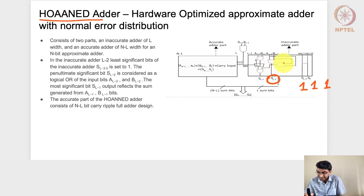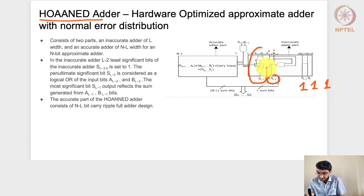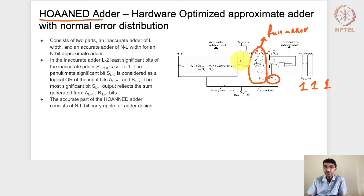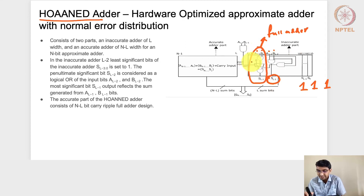In HOANED, an AND gate is present which handles carry forwarding. This AND gate represents the carry out from the addition of the two bits A and B at the second most significant bit of the inaccurate portion. This carry out is fed into the accurate portion of the design. The accurate portion uses a full adder design with a multiplexer to make it slightly faster.